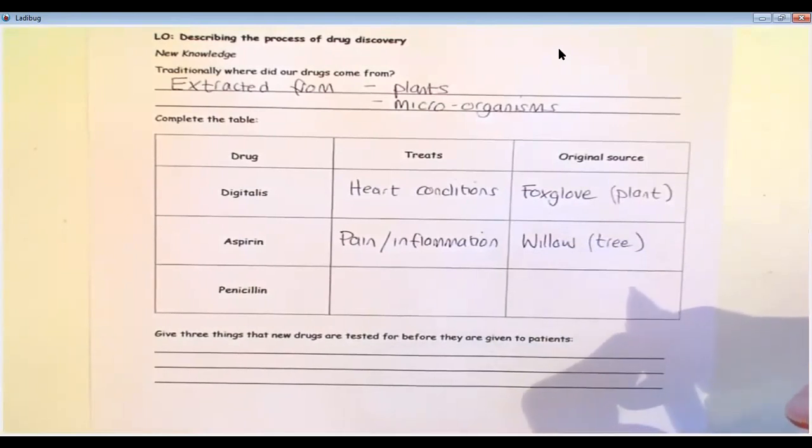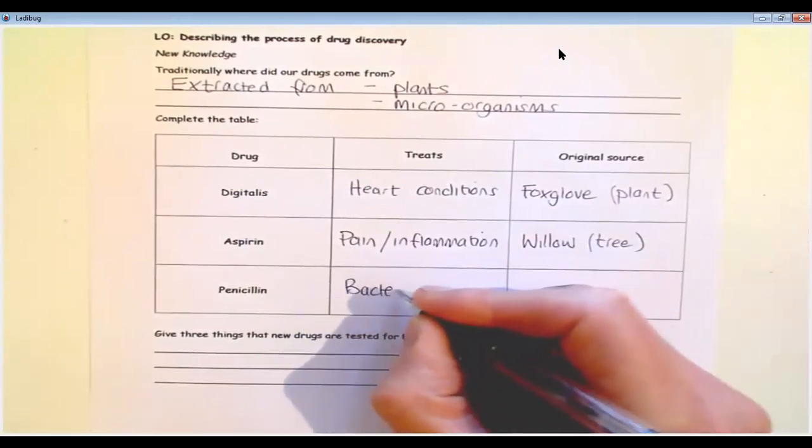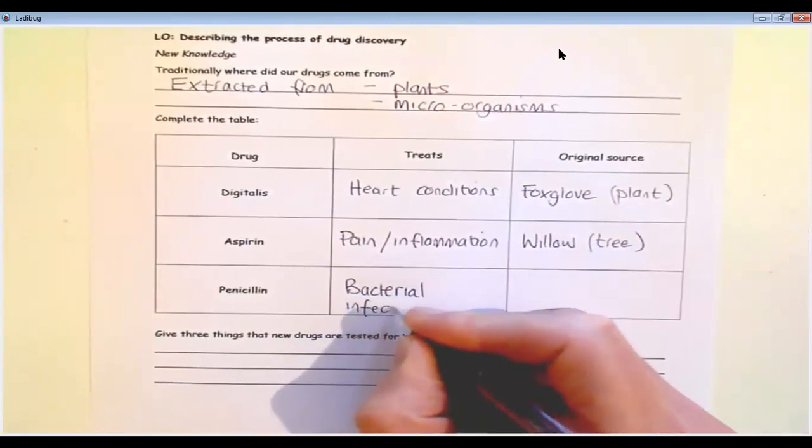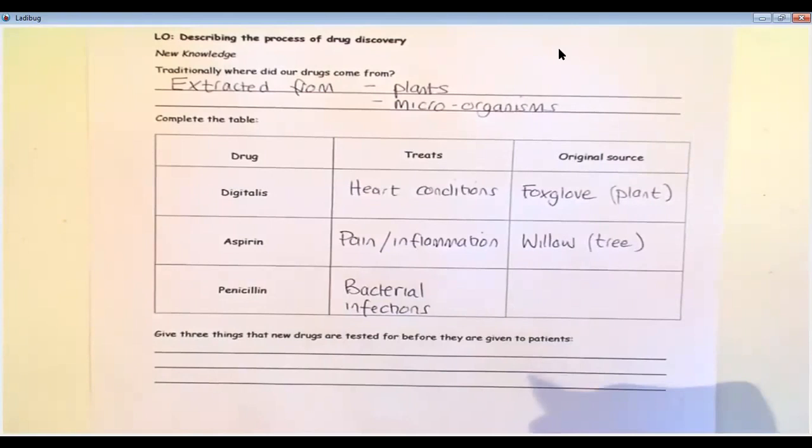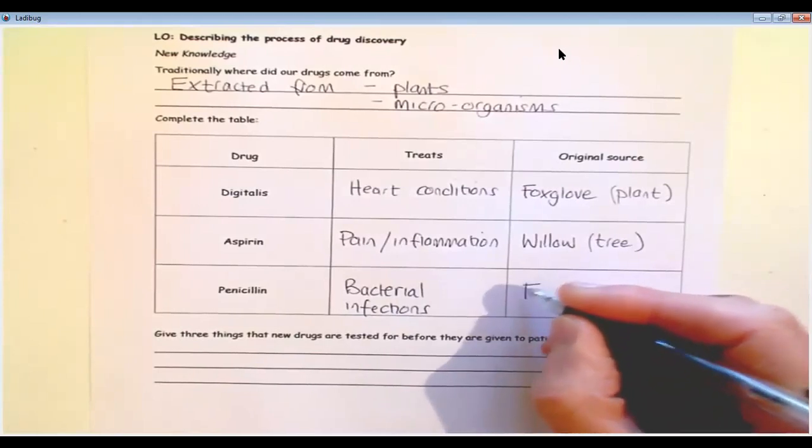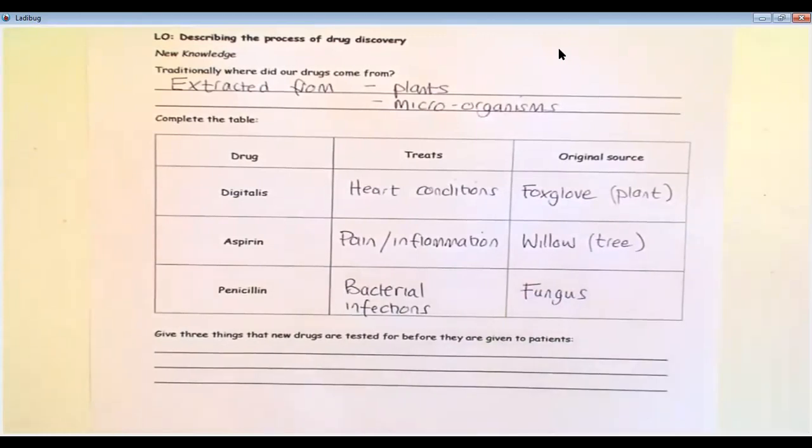And finally, penicillin. Again, I'm sure everyone's heard of penicillin. Penicillin is used to treat bacterial infections, which we dealt with in the last lesson. And lots of you in the know will know that it was originally purified from a fungus. So those are our three common drugs, and you can see that they come from plants and microorganisms there.